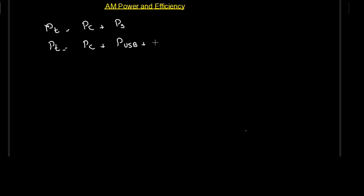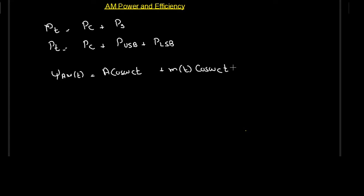We have the carrier power plus upper sideband power plus lower sideband power. The general equation of the amplitude modulated signal is equal to the carrier signal A cosine(ωc·t) plus the message signal m(t) multiplied by the carrier cosine(ωc·t). For tone modulation, m(t) is equal to μA cosine(ωm·t), because this is of single frequency — that is why it is called tone modulation.